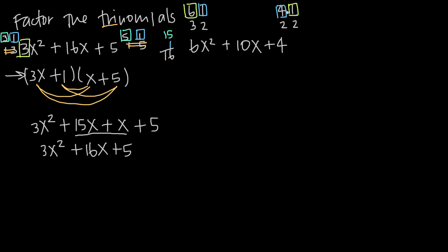What about 6 and 1 with 2 and 2? If we did 6 with 2 we'd get 12, and 1 with 2 gives 2 — that would require different signs, but since we have a positive 4 our signs must be the same, so that won't work. What about 3 and 2 with 4 and 1? Doing 3 with 4 gives 12 and 2 with 1 gives 2, which would again require different signs — not valid. But 3 and 2 with 2 and 2: doing 3 with 2 gives 6, and 2 with 2 gives 4. Adding 6 and 4 gives 10, so that's another valid combination.